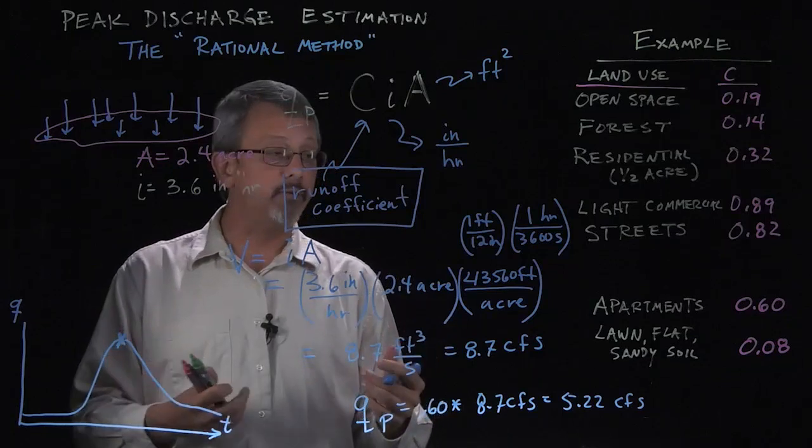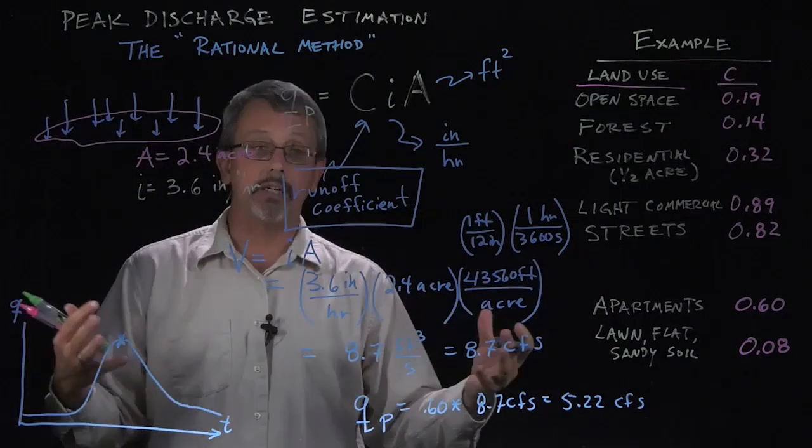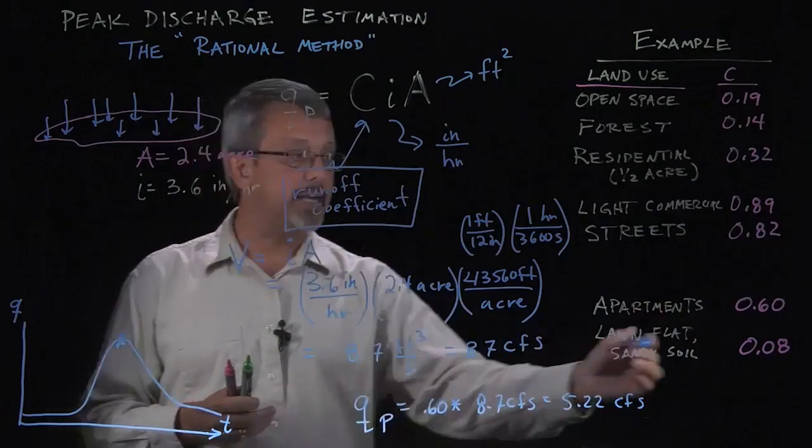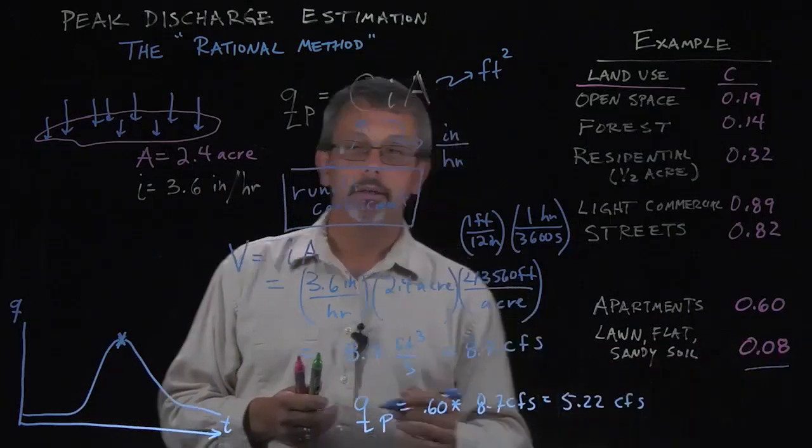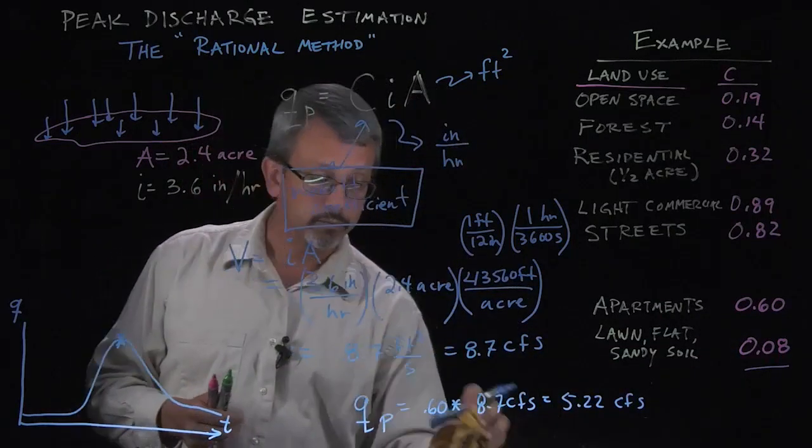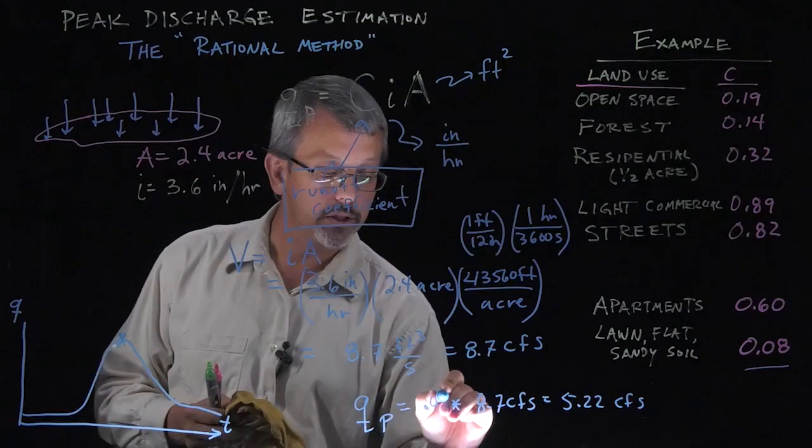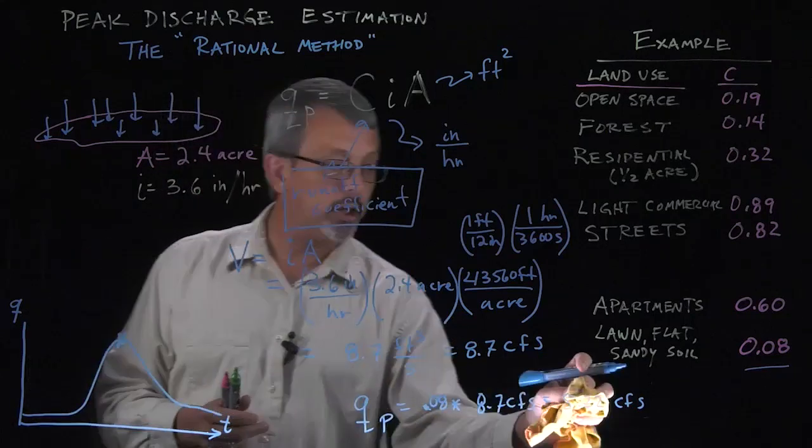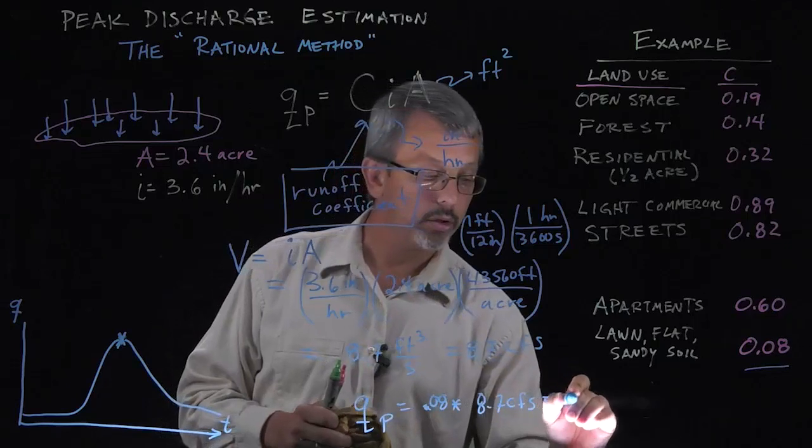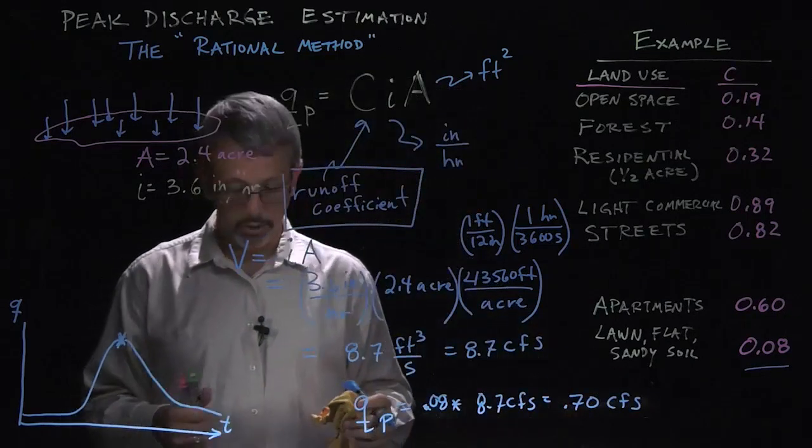Notice that's very different than if we have this falling on a very large 2.4 acre field that's effectively a lawn that's maintained on flat, flat lawn maintained on sandy soil. In that case, the coefficient has been established as being a much smaller value of 0.08. If I plug that value in instead, 0.08 and multiply it, I get a much smaller value of 0.70 cubic feet per second.